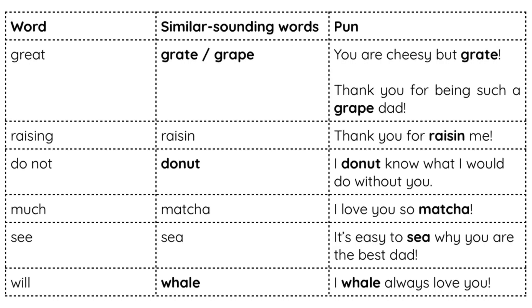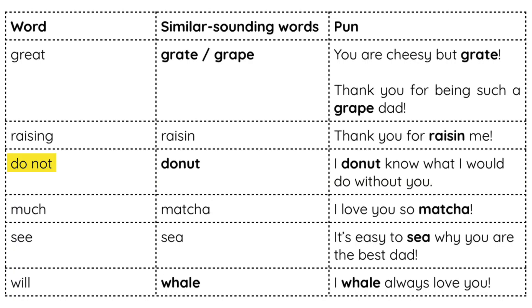Today I'm going to provide you with some helping words to create your own puns. Take a look at this table. For example, you may want to thank your dad for being such a great dad — think of a similar sounding word to 'great,' like 'grape,' and the pun could go: 'I'm not trying to be cheesy, but I think you are grate.' Another easy one is 'do not,' which can be replaced with 'donut,' so your note could say: 'I donut know what I would do without you.' You can even draw pictures related to your pun to make it even clearer for your dad.